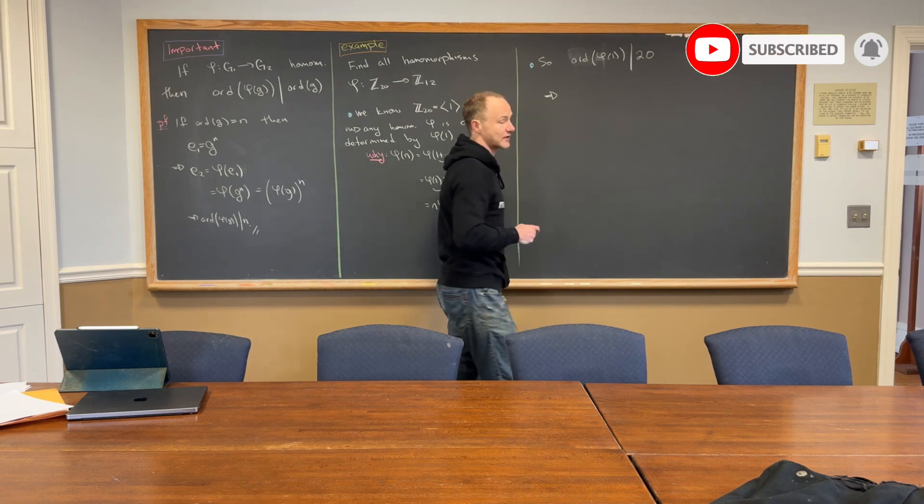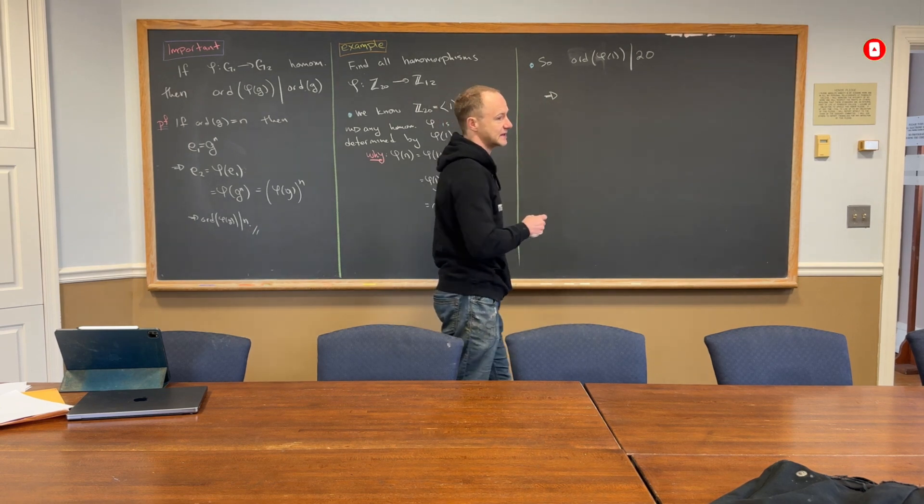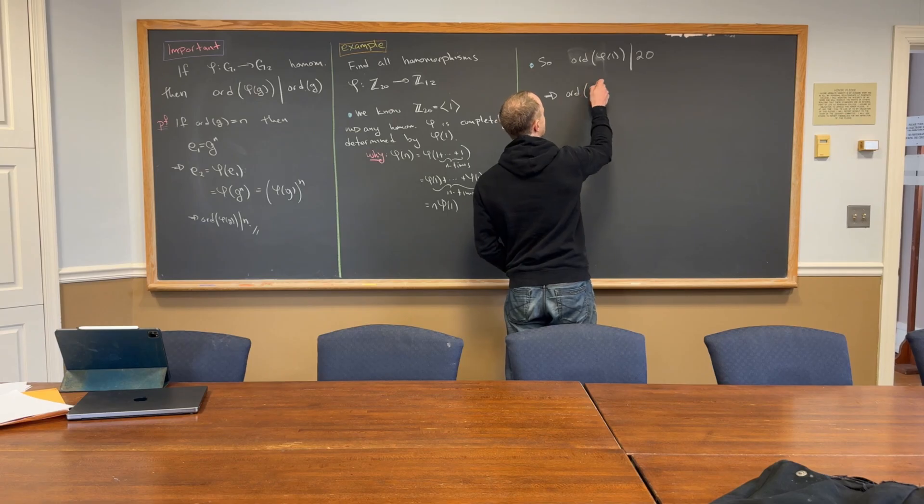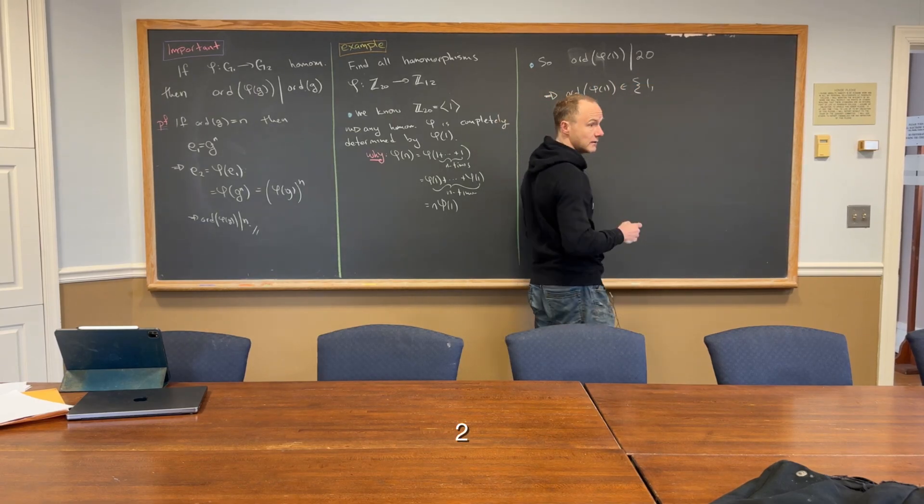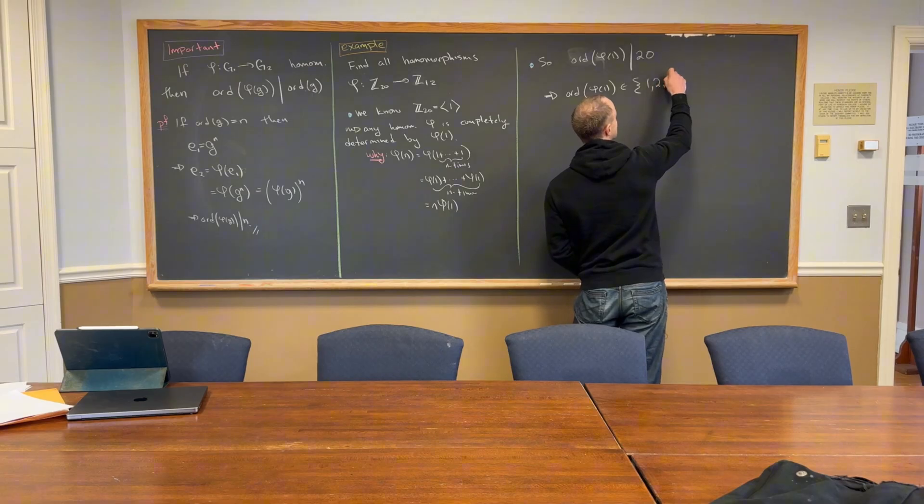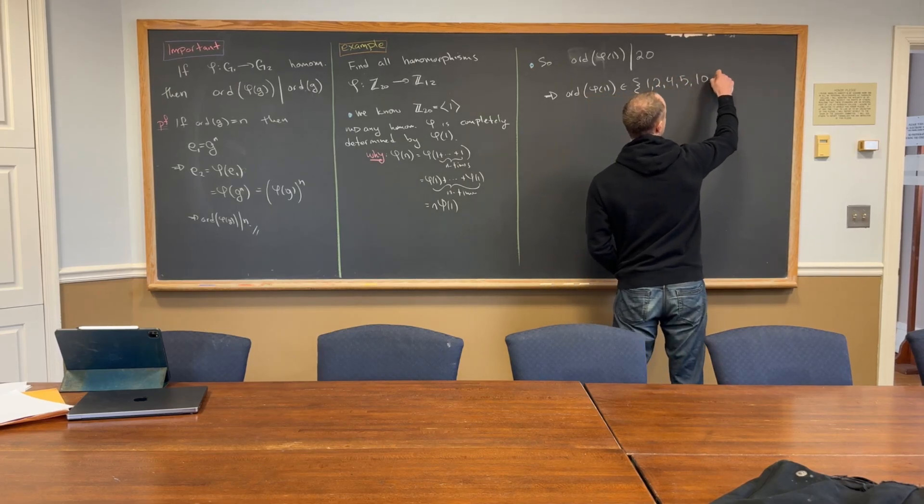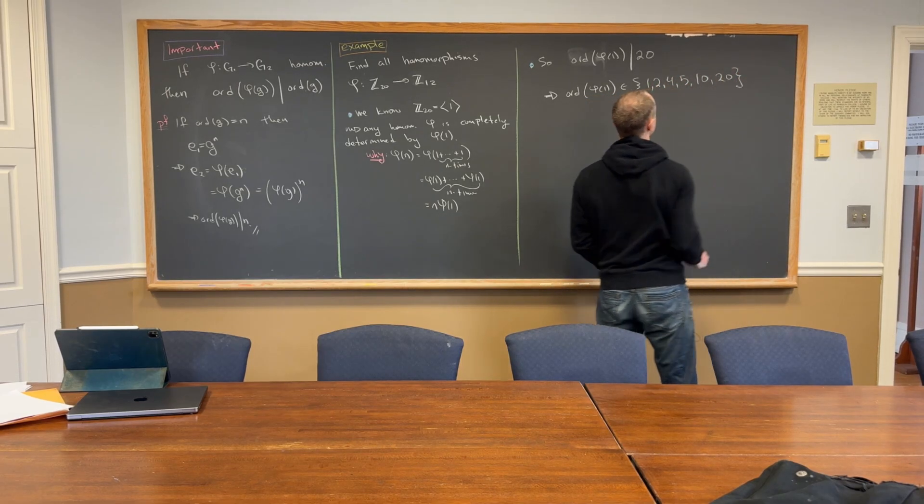Okay, but then what are the divisors of 20? Because this is telling us that the order of phi of one has to be a divisor, right? So, the order of phi of one has to be a divisor of 20. So, we've got one, yeah, four, five, ten, twenty.